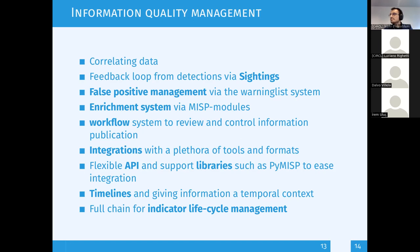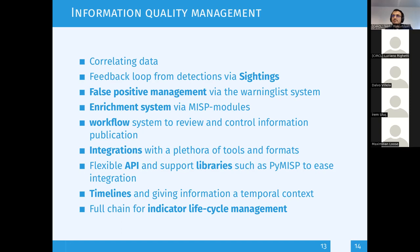The enrichment modules in MISP can also be used for qualifying data. For example, doing passive DNS expansions — if you have a domain with 25,000 IP entries, it might be a multi-homed machine, which makes it less interesting to pivot on. This gives a quality signal to the analyst. We recently introduced the workflow system — a complete workflow in MISP that can be used to review the quality of information, checking whether context is set, specific tags are set, and so on. Based on that, you can even control publication — completely blocking publications until the information meets certain criteria and requirements from the CTI team.